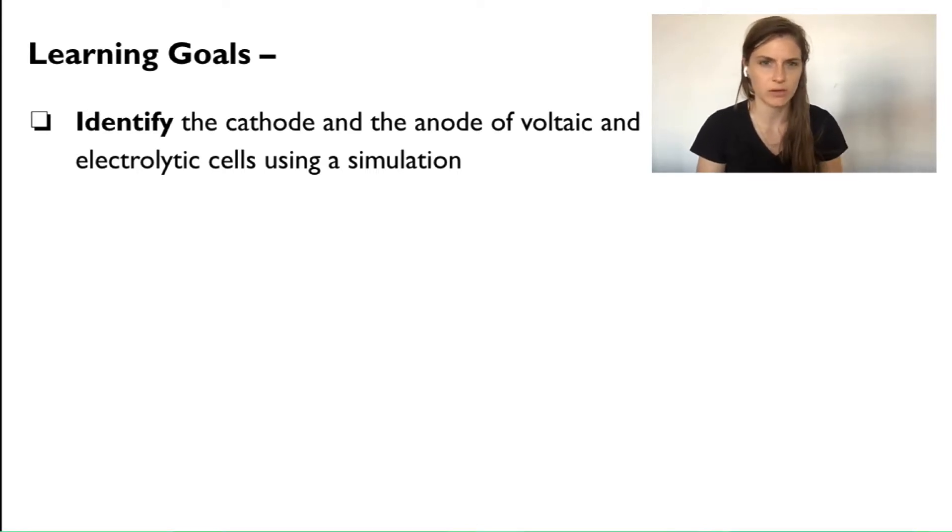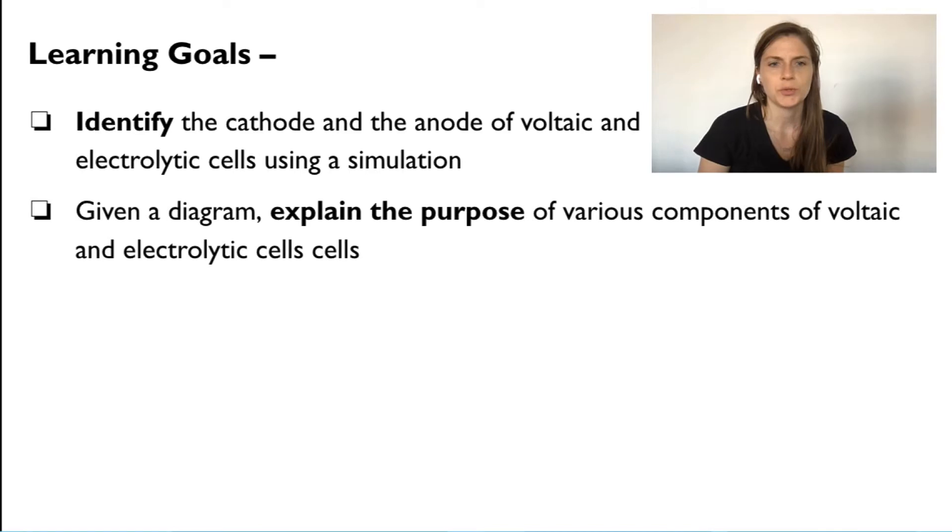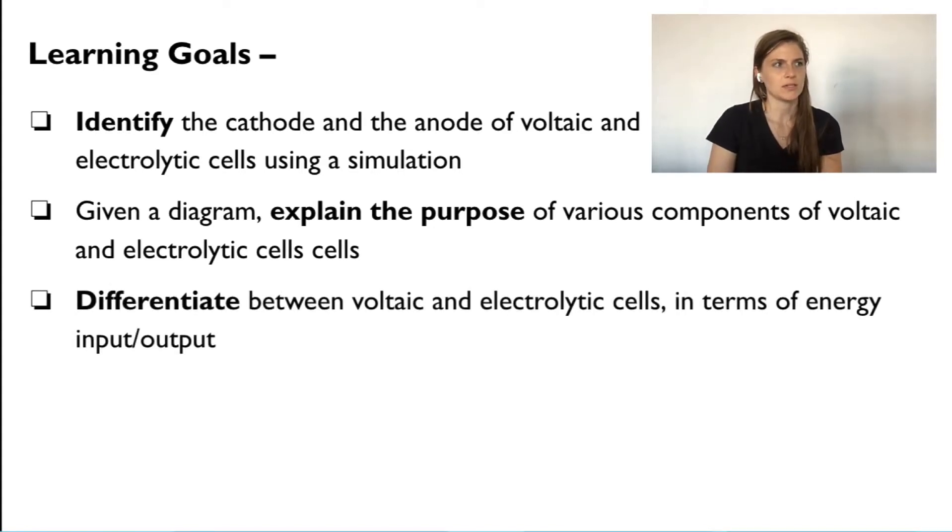Where's the cathode? Where's the anode? Where's oxidation? Where's reduction? What's happening on this diagram or on this simulation? We are also going to explain the purpose of various components of voltaic and electrolytic cells given a diagram and differentiate between voltaic and electrolytic cells in terms of energy input and output and other sort of regent style questions that we might see.